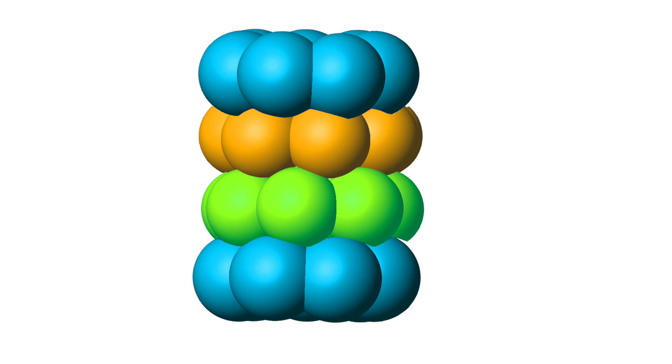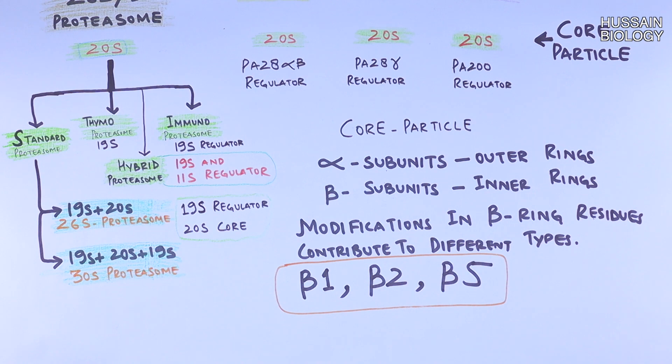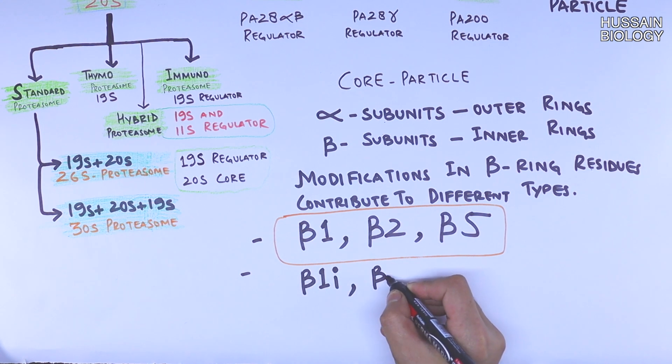Like we see in standard proteasome, we have beta 1, beta 2, and beta 5 residues as catalytic units. And alternatively, if modification occurs, then we have beta 1i, beta 2i, and beta 5i residues which makes the immunoproteasome.